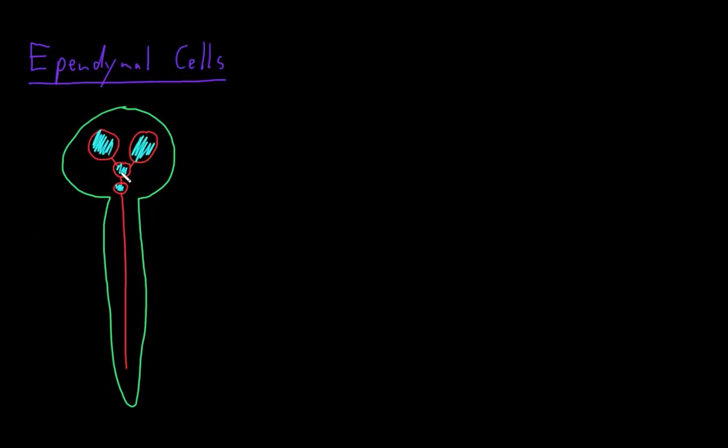And the lining of these spaces is called the ependyma, which is made up of ependymal cells. The ependyma is named for a Greek word for covering. And the ependymal cells that make up the ependyma are glial cells of the central nervous system derived from neural stem cells.